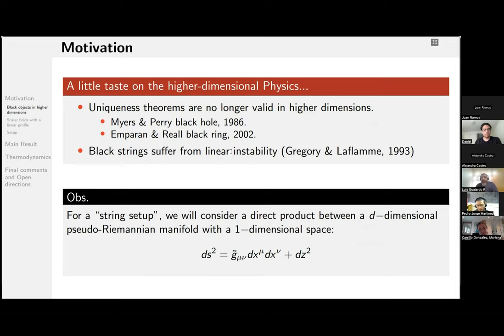So to set some definitions for a string setup throughout this talk, we will consider a direct product between a D-dimensional pseudo-Riemannian manifold, which we call here the background, with a one-dimensional space. So at the end of the day, we are splitting the manifold so that the extended coordinate does not belong to the X. And we take advantage of this ansatz for the rest of the talk.